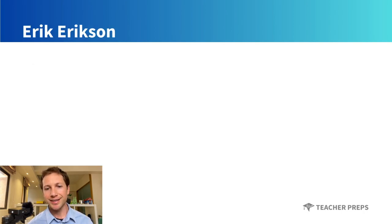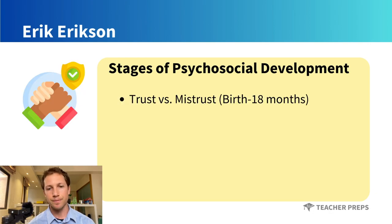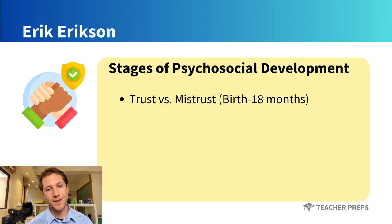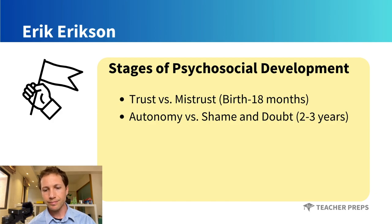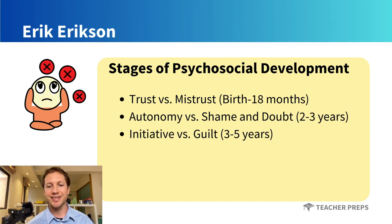Our third person is Erik Erikson, who created the stages of psychosocial development. First, trust versus mistrust happens from birth to 18 months, when children develop a sense of trust when caregivers provide reliability, care, and affection — a lack of this leads to mistrust. Then autonomy versus shame and doubt happens around ages two to three, when children develop a sense of personal control over physical skills and begin to build independence.